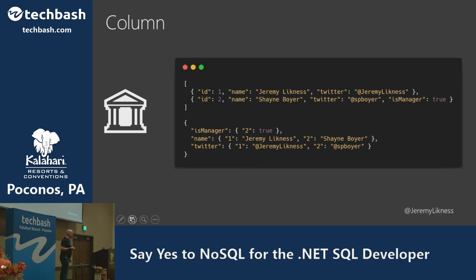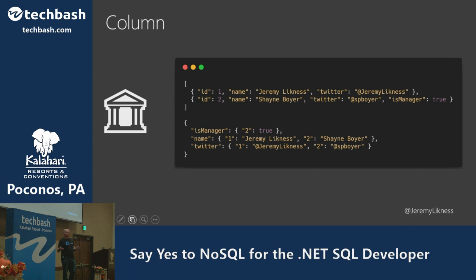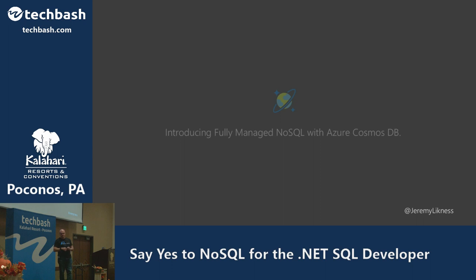Column databases take data we'd conceptually organize into rows — bags of properties with an identifier — and store it as columns. The key benefit: if you're searching for values over a column, you have a highly optimized lookup. Even better, if you're only projecting a few properties off a large complicated document, instead of loading all pages of data and subsetting them, you can project right off the column pages. It's highly optimized for that scenario.